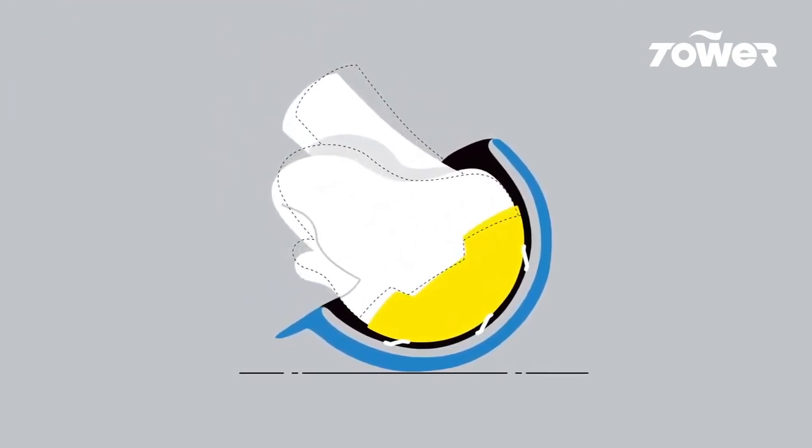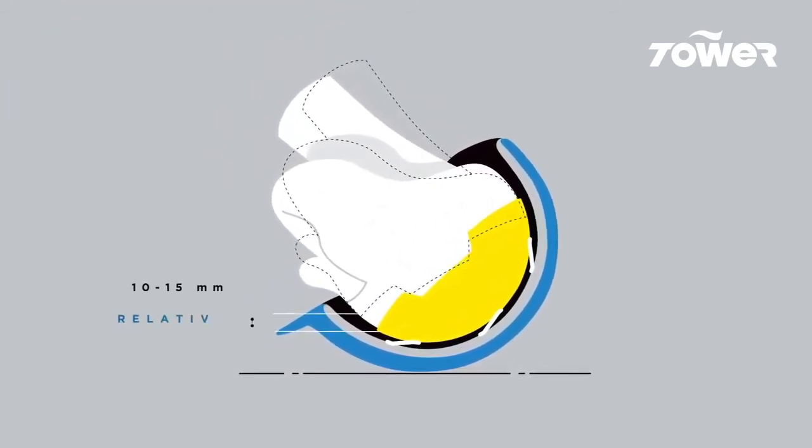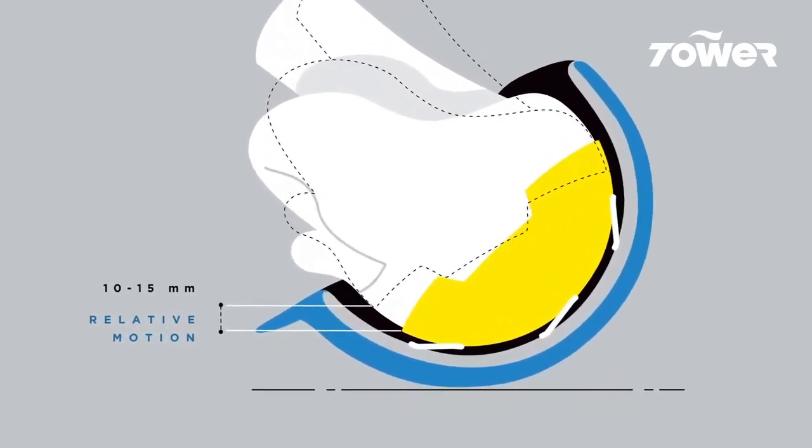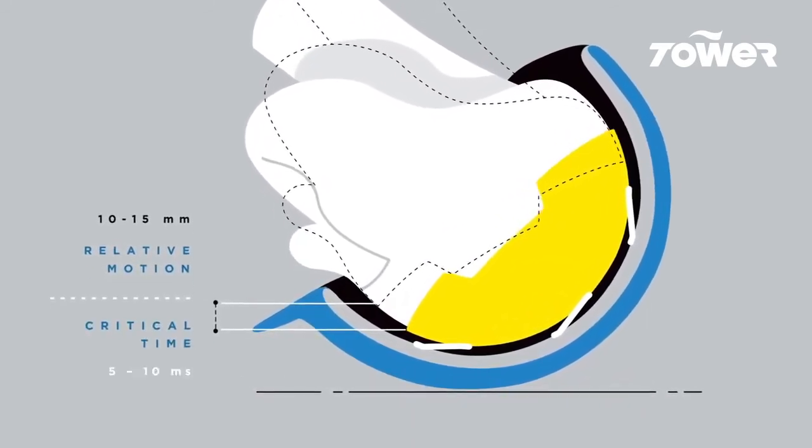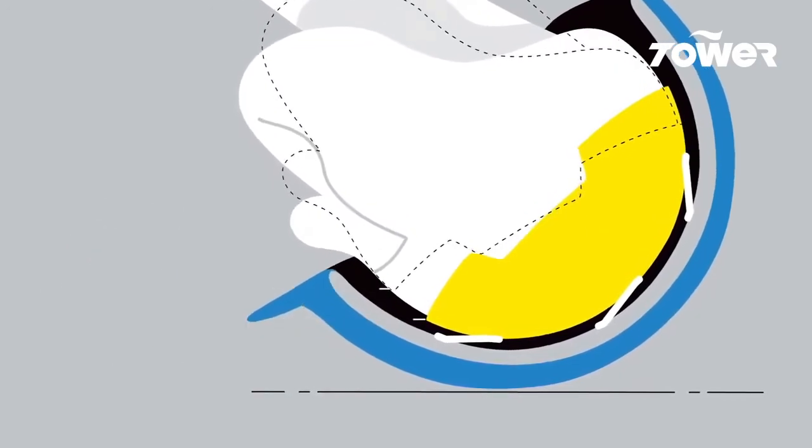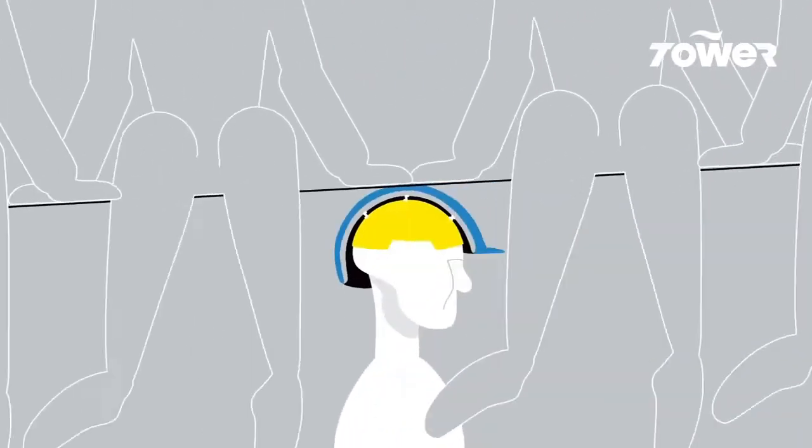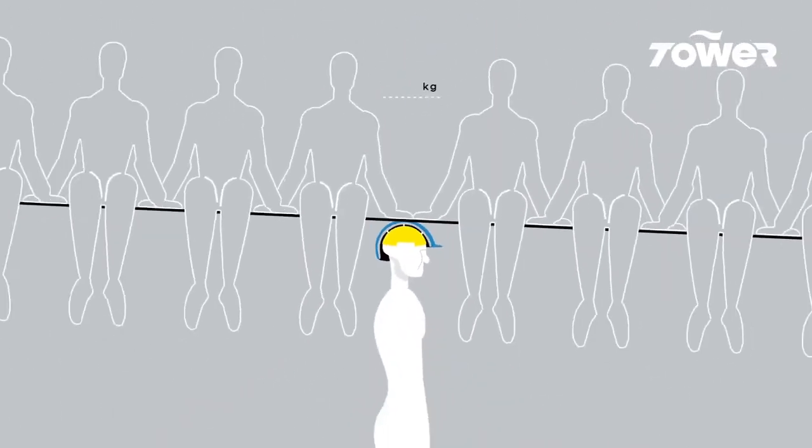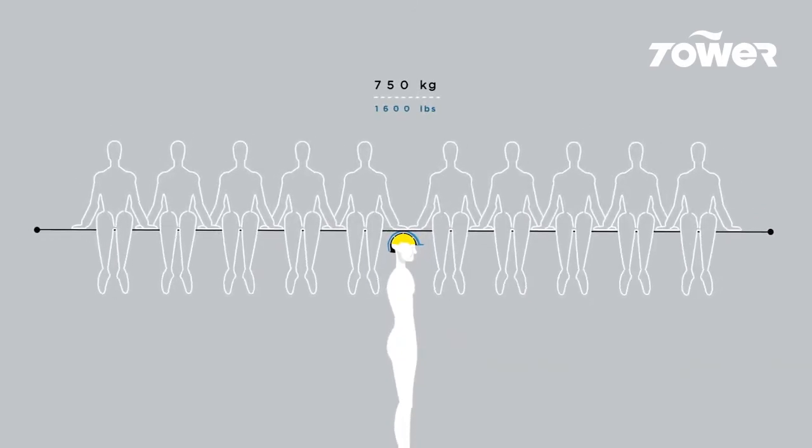The pattern and design of the MIPS brain protection system allows 10 to 15 millimeters of relative motion between your head and helmet during the critical 5 to 10 milliseconds of an impact, even when the combination of your body weight and velocity can create a contact force of more than 750 kilograms.